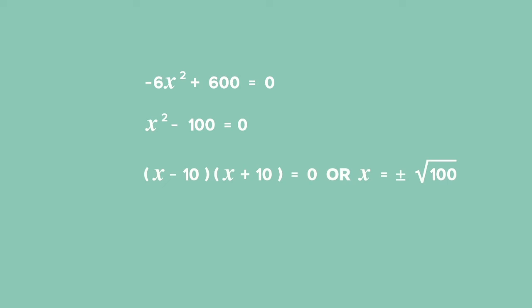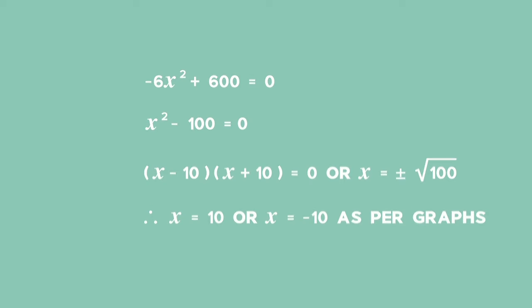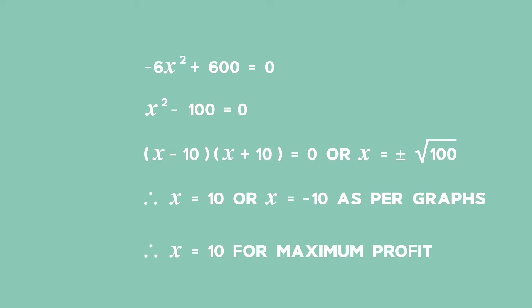If we relate this back to functions, this is equivalent to finding the maximum value of the function, since the number of employees cannot be negative. Therefore, x = 10. This means that 10 employees will ensure a maximum profit.